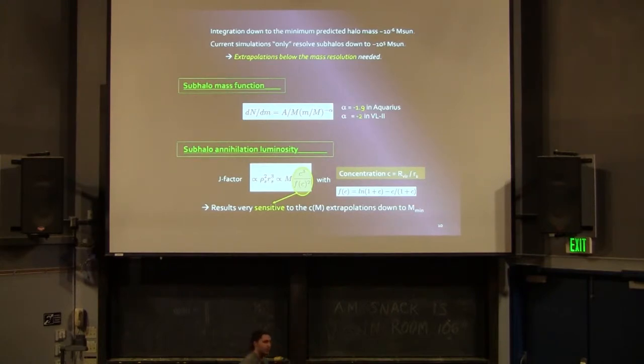Of course, N-body simulations can help on this. But the minimum halo mass can be as low as 10 to the minus 6 solar masses or so. This can depend a lot depending on the details of the computations. You can find papers that tell you something like 10 to the minus 3 or even higher, but down to 10 to the minus 12 solar masses or so. I think that 10 to the minus 6 solar masses can be a good value just to keep in mind. But we know that the state-of-the-art simulations of Milky Way-sized halos don't go that far. The mass resolution is essentially like 10 to the 5 solar masses or so for Via Lactea or Aquarius. It's clear that we have to do some kind of extrapolations below the mass resolution.